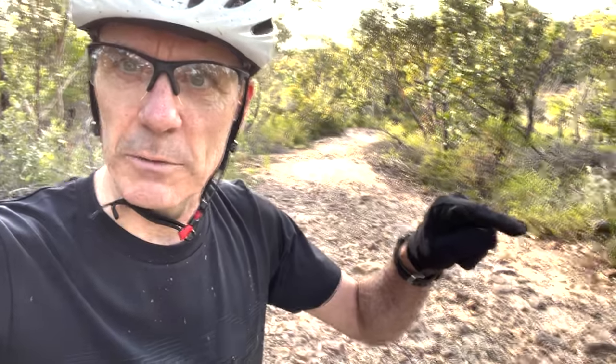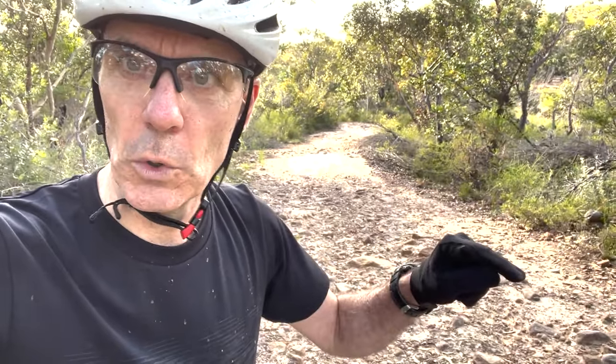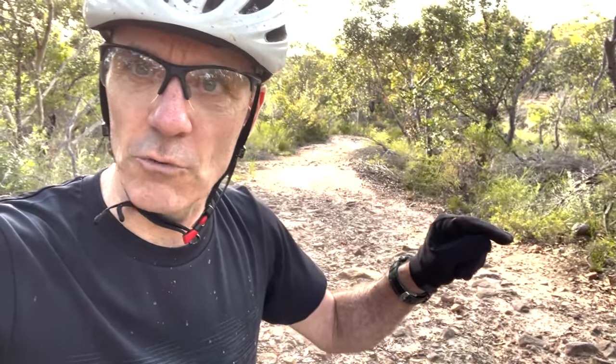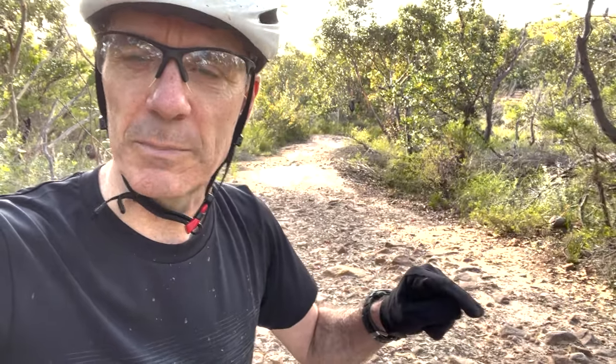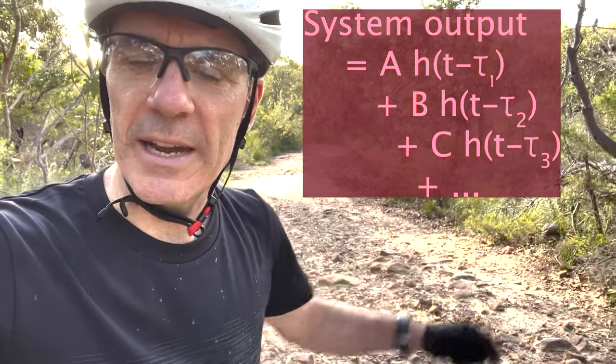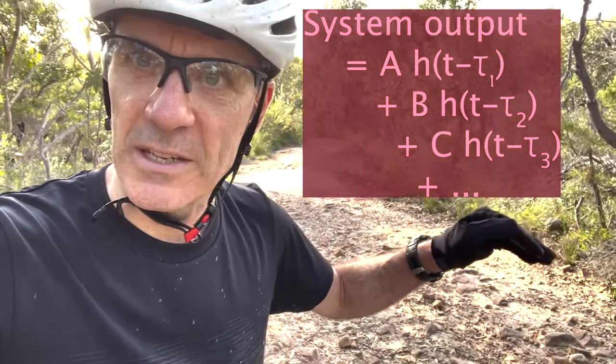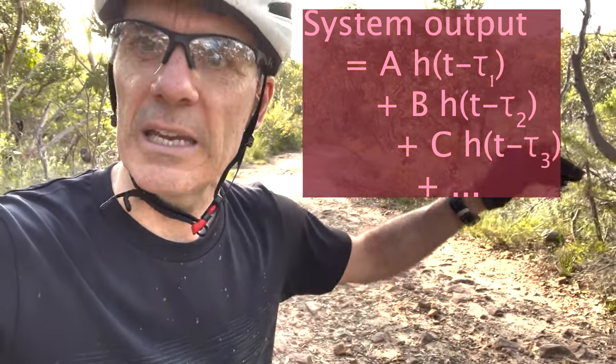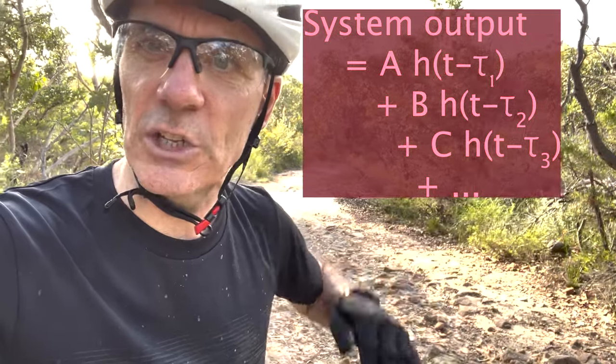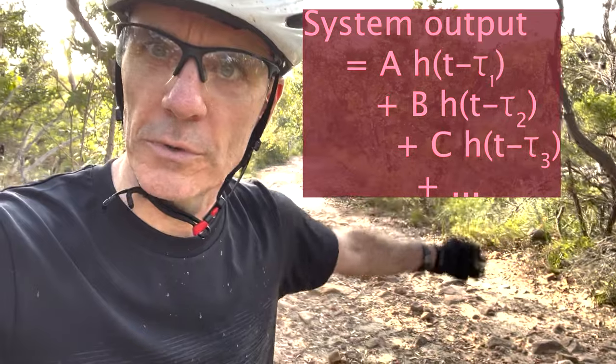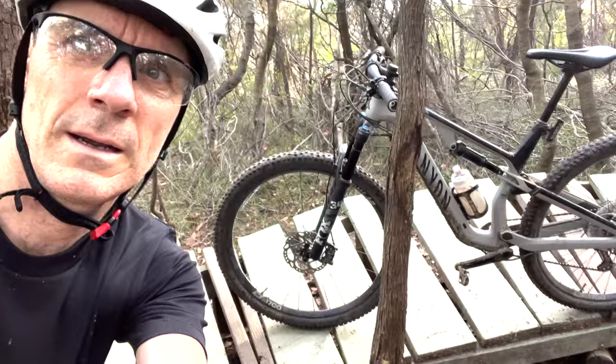Now let's think of a situation where there are lots of rocks, like this path behind me, and they're not spaced far enough apart for the system to fully return to steady state. There will be an initial response from the first rock, but before it recovers the second rock hits, acting as another impulse from whatever starting point the system reached after the first rock. Each subsequent rock produces a response, and the accumulated effect of all those impulses gives you an overall combined response.